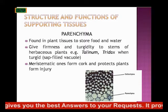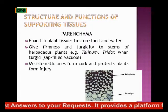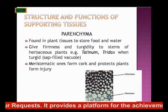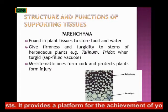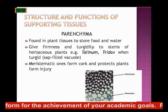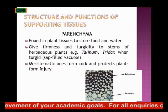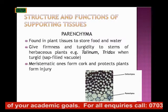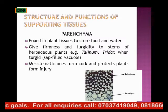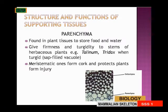Examples of such plants include Talinum (the water leaf), Talinum triangulare, and Tridax procumbens. When they are turgid, they are sap-filled. When you break your water leaf, you can see water come out — that's the sap, the liquid part. Meristematic parenchyma forms cork and protects the plants from injury.